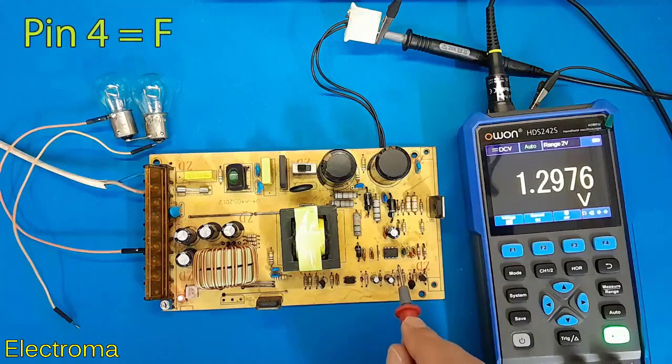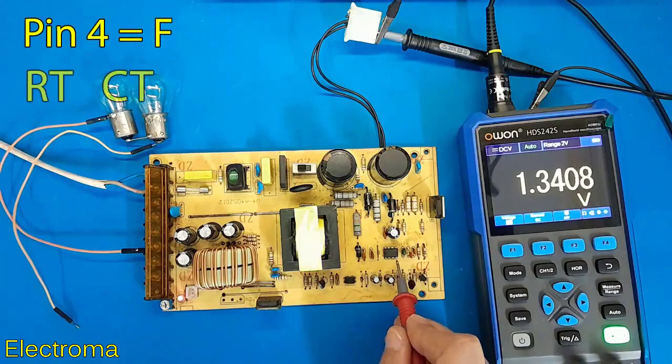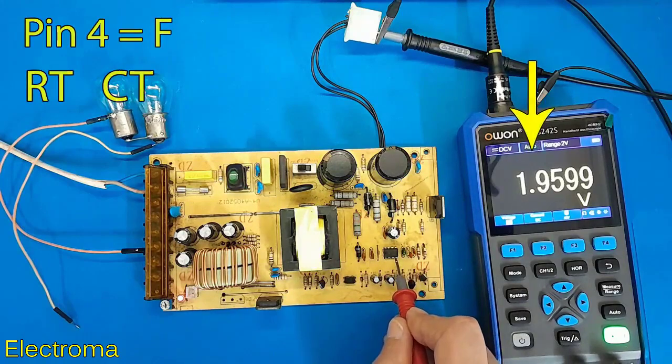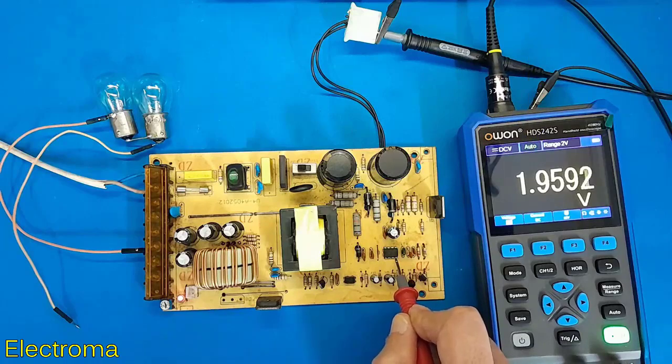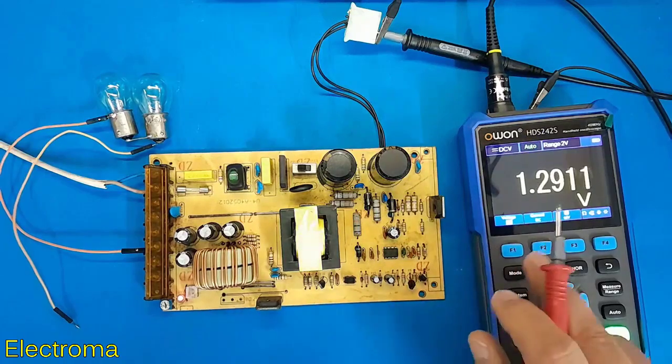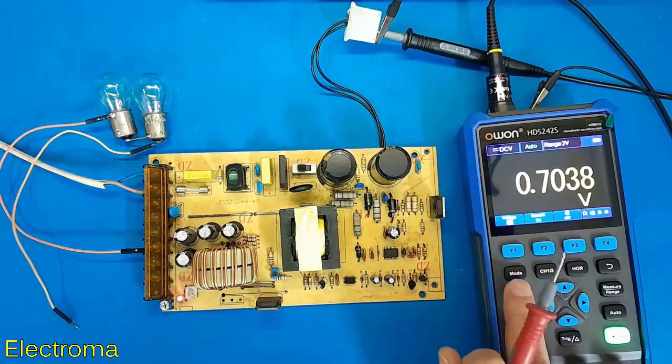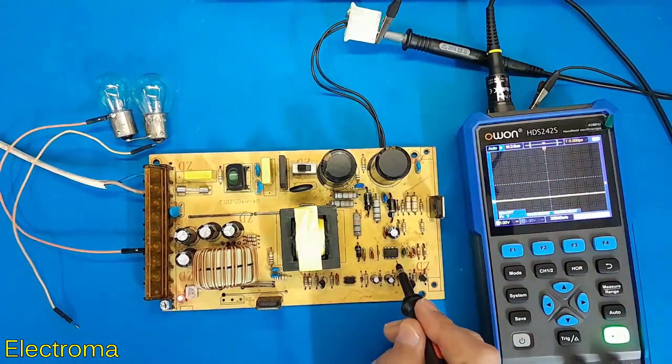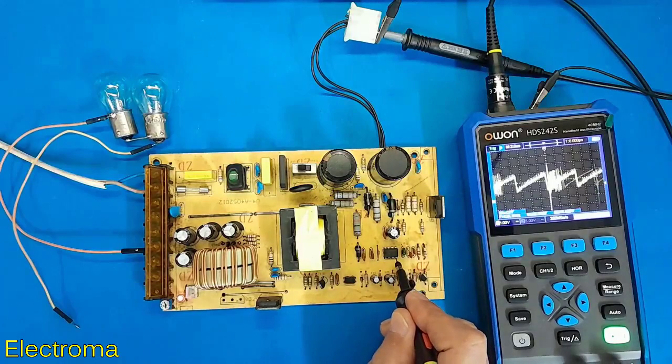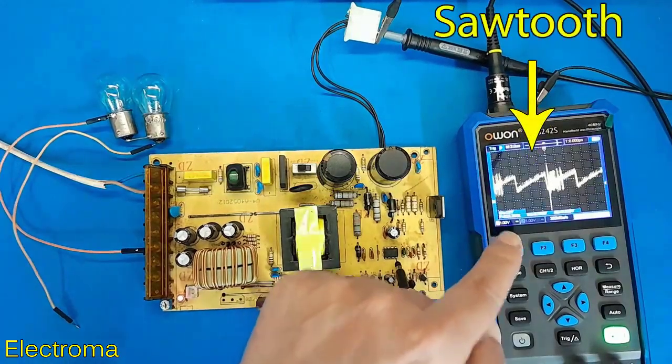Pin 4 is the frequency generator, the same as RT CT. This is the voltage of this pin. A sawtooth waveform will be seen with an oscilloscope. I put the device on the oscilloscope. This is a sawtooth waveform.